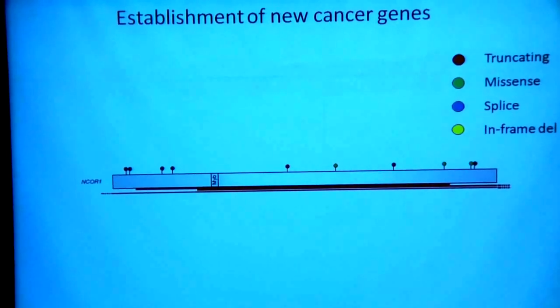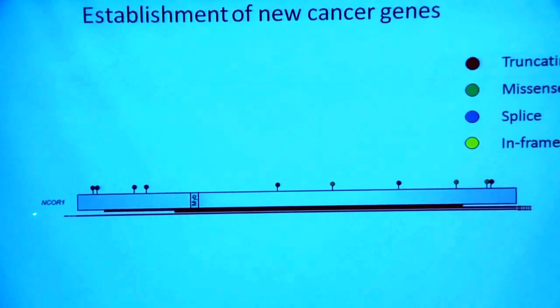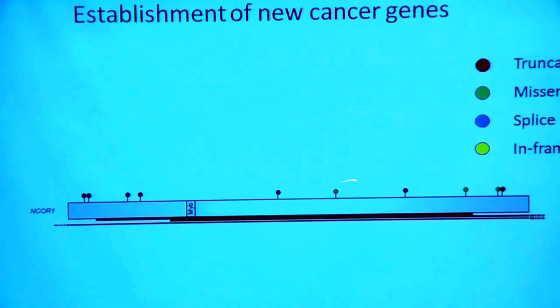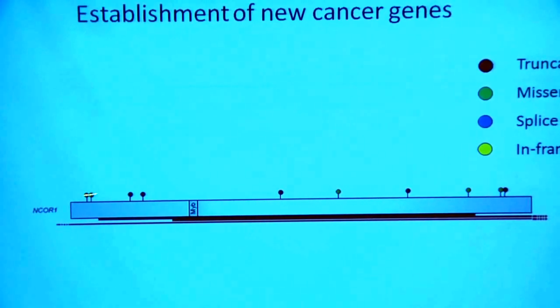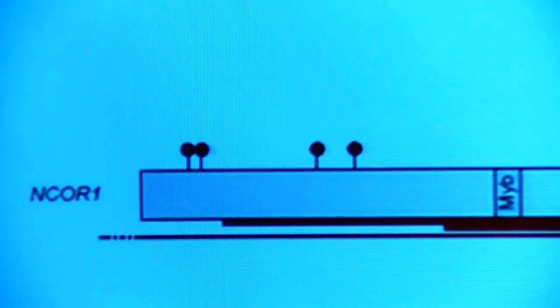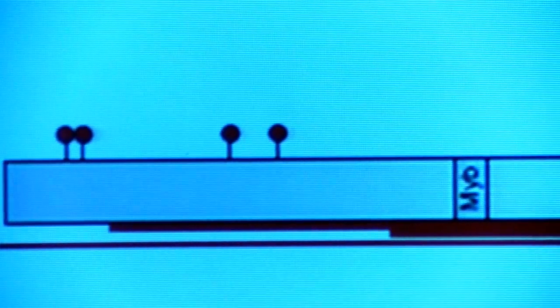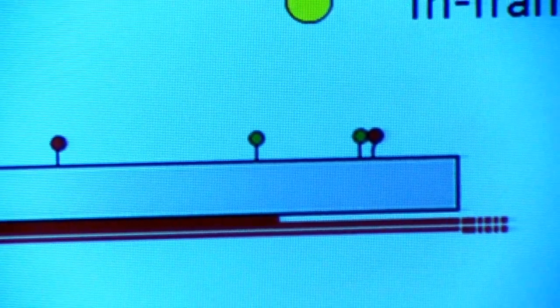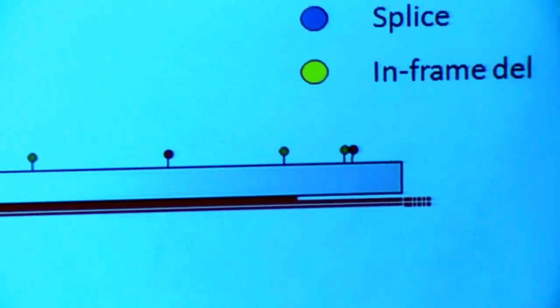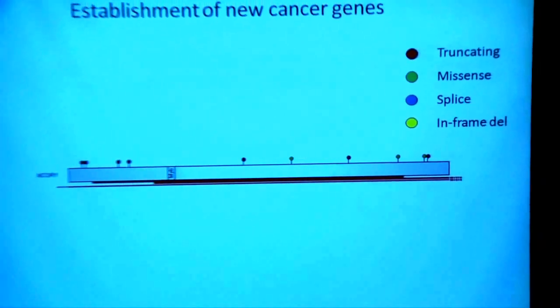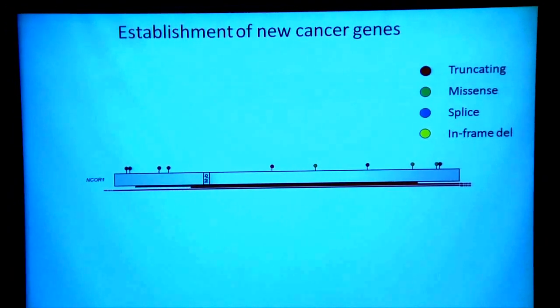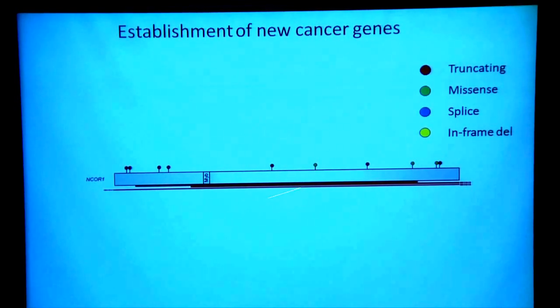I'll illustrate some of the patterns we're finding. This is one of the new genes, NCOR1. These lollipops here represent the somatic mutations we found in this gene, and you can see they're mainly coloured in red — red indicates the mutation is truncating, so it will inactivate the function of the protein from this gene. You can also see there are red bars here representing homozygous deletions — deletions of both copies of all or part of this gene. Both these truncating mutations and homozygous deletions are typical of what you'd expect of recessive cancer genes, genes that are inactivated, also known as tumour suppressor genes.